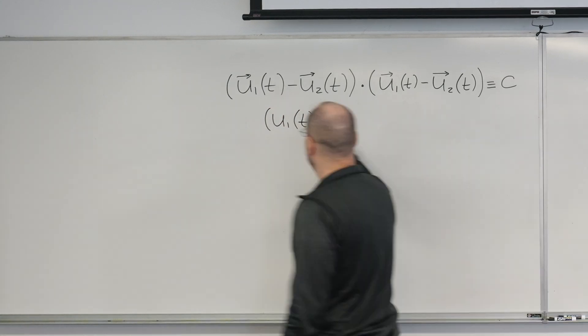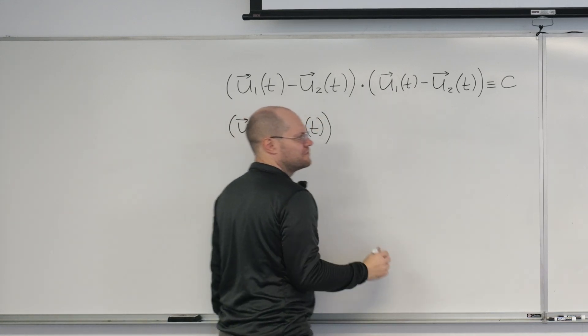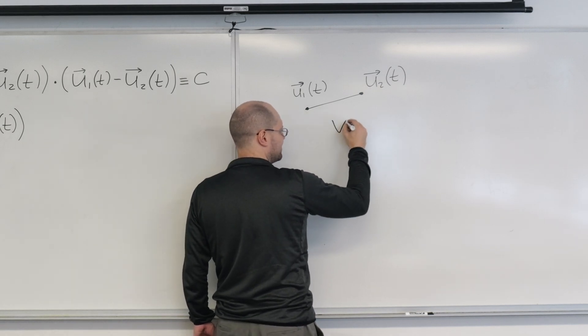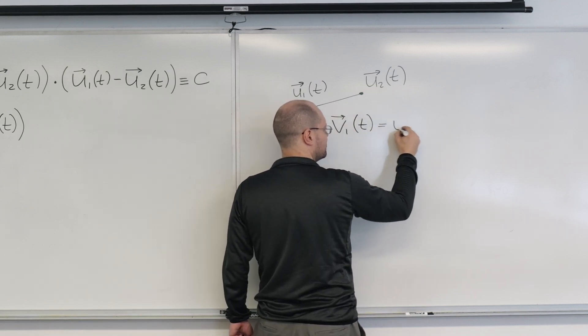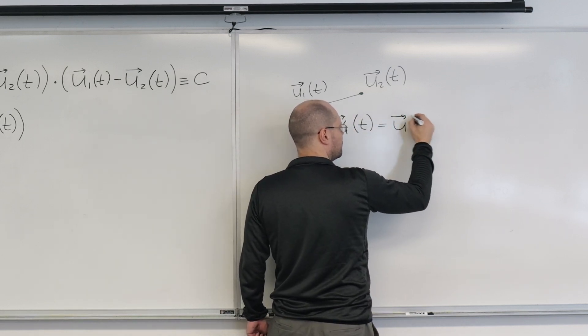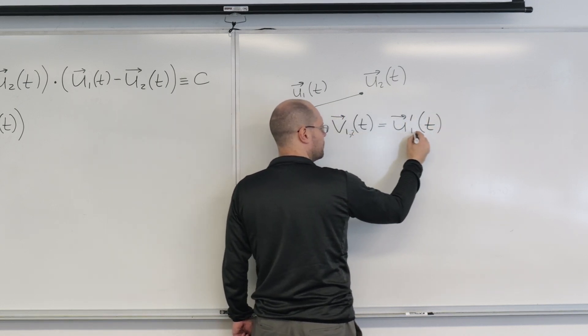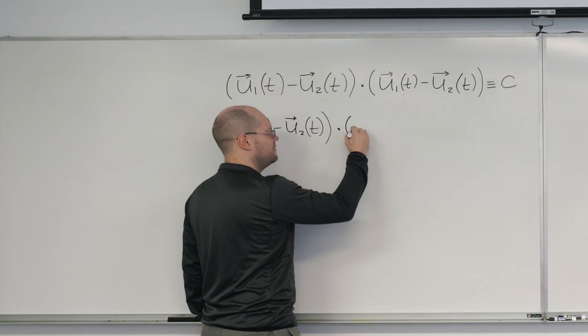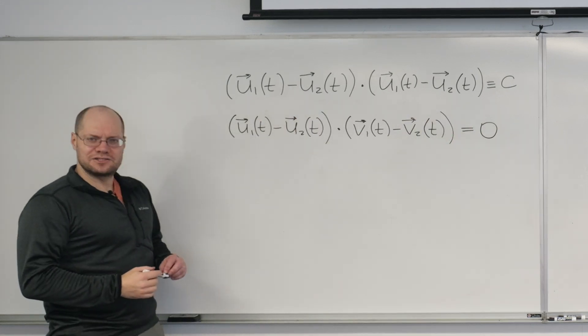We end up with, and we have a perfect opportunity to call the derivatives of these functions V1 and V2. It's perfect because it's the next letter alphabetically, and V also stands for velocity. (U1(t) - U2(t)) dotted with (V1(t) - V2(t)) = 0.